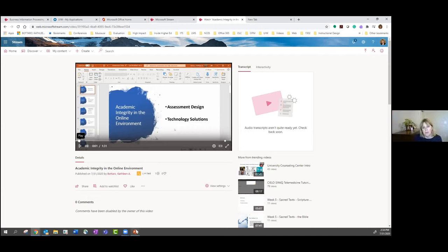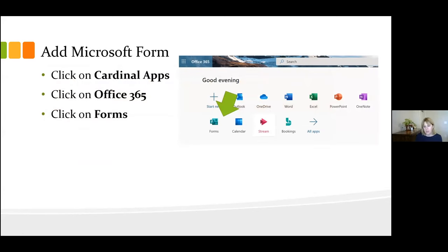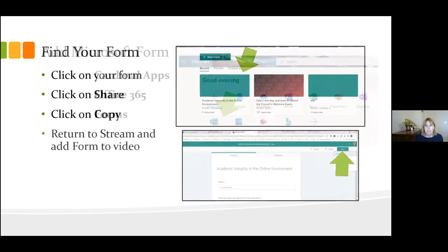Now it's time to add my form. I created the form ahead of time and I'm just going to grab the link from the form and put it in Stream. We go to Cardinal Apps, then Office 365, then Forms. When you get to Forms, it shows all your forms — your most recent ones. I click on it and that opens my form. Then I go to Share in the right-hand corner, and click Copy. This is the link to access for responses. You have options: anyone with a link can respond — that will be anonymous — or only people in my organization can respond. I chose that one because I want to know who's responding.